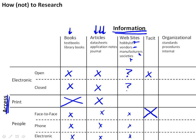The last type of information is organizational knowledge. This includes standards such as those put forth by the IEEE — for example, how you communicate over a USB bus — procedures on how to do things, and internal organizational knowledge within an organization. Some of this is available electronically and is open, such as standards. Many organizations have their own closed websites and procedures not accessible to people outside the organization. Many of these procedures and standards you learn by talking to people face-to-face.